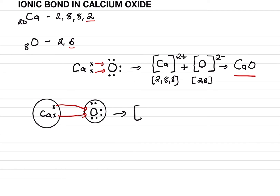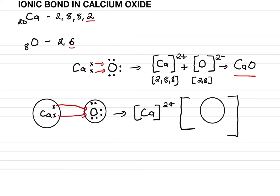Make a square bracket, write Ca inside, close the bracket and write 2+. Then make another square bracket with oxygen inside showing it now has six original electrons plus two more received from calcium, and close with 2−. This gives us CaO, calcium oxide. I hope you have understood this.